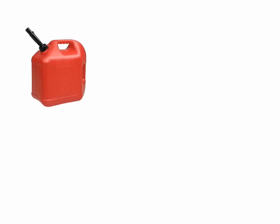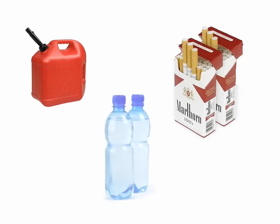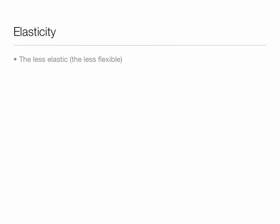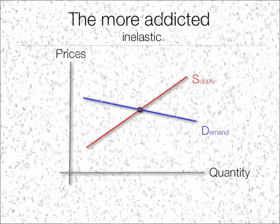Some examples of inelastic goods are gasoline, cigarettes, and water. The less elastic, the less flexible — that means consumers are not flexible and cannot easily change. There are no good substitutes, a lack of choices and options. Same is true with gasoline: you have to buy gasoline. Same is true with taxes on cigarettes.